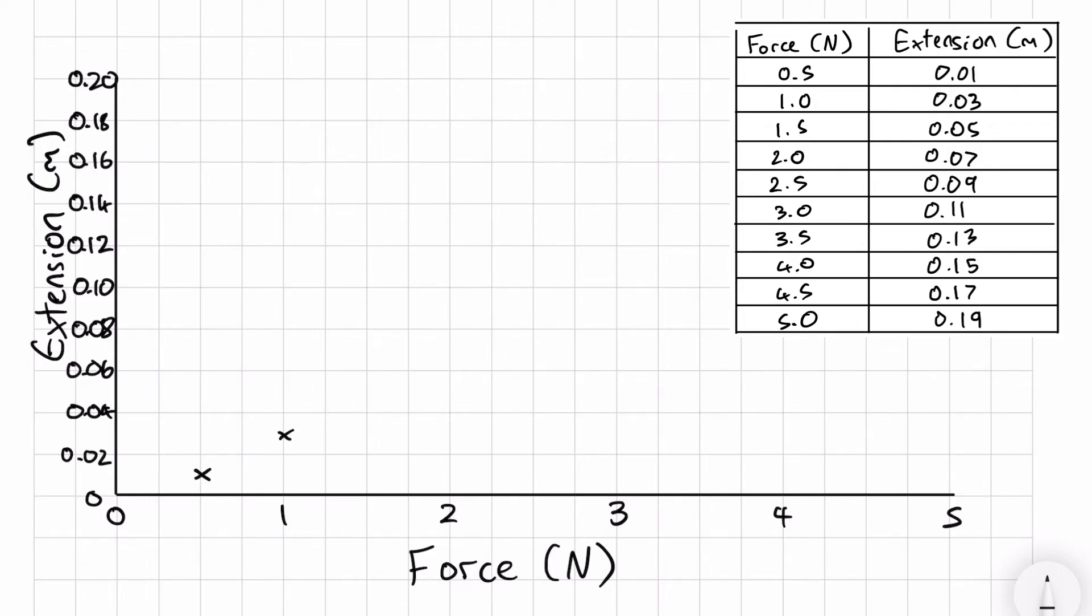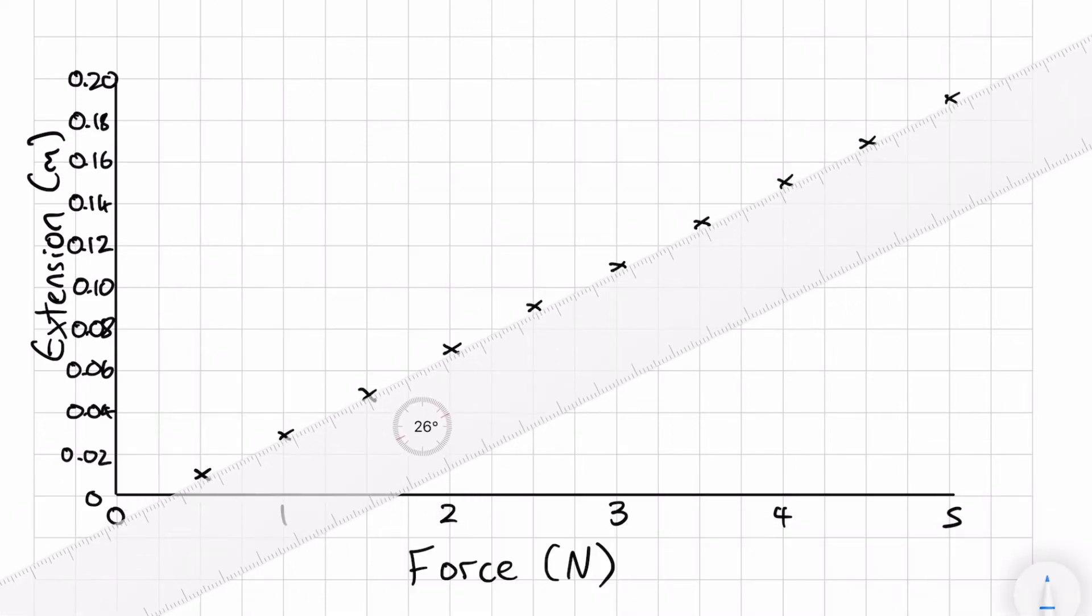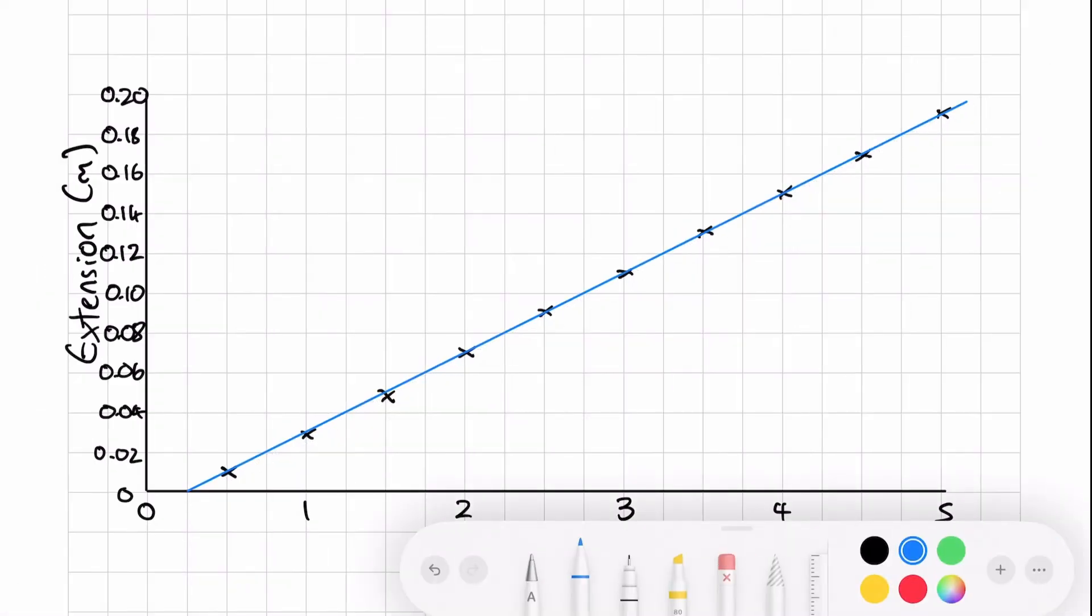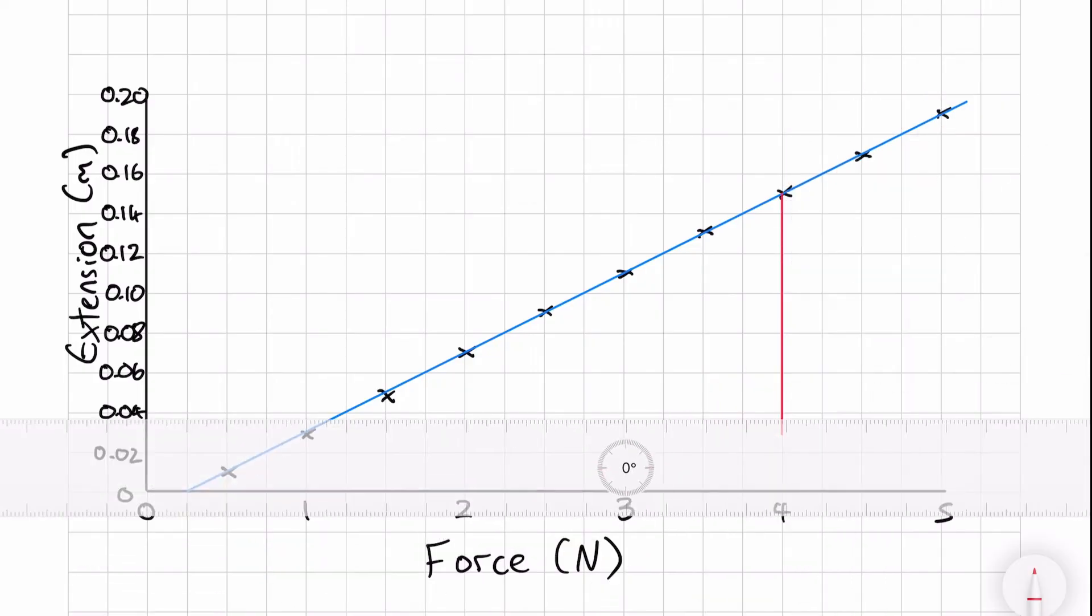We plot the points and draw the line of best fit. Notice that our line of best fit does not go through the origin. This is because there might be some initial tension on the spring or slight inaccuracies in measuring the extension.